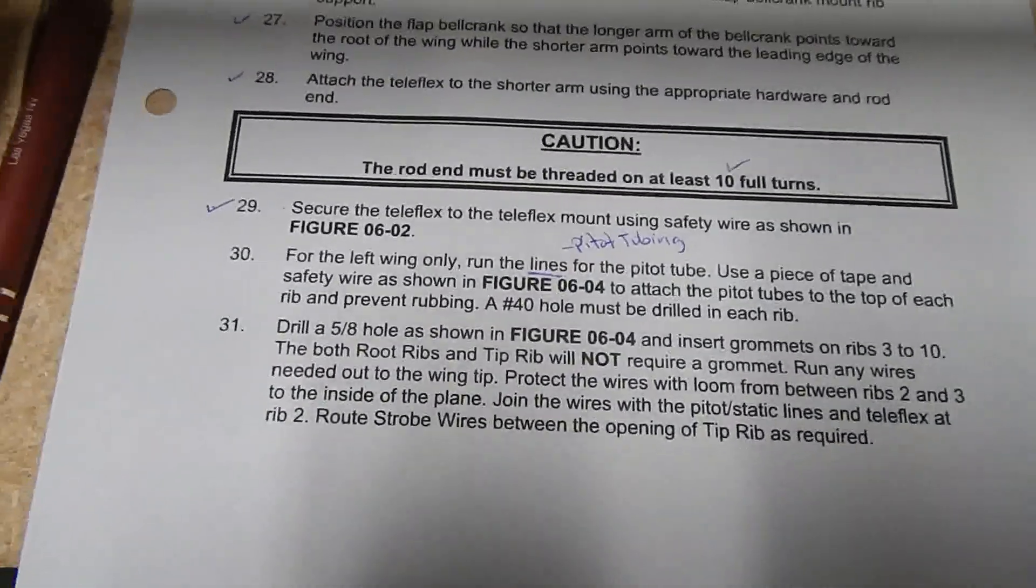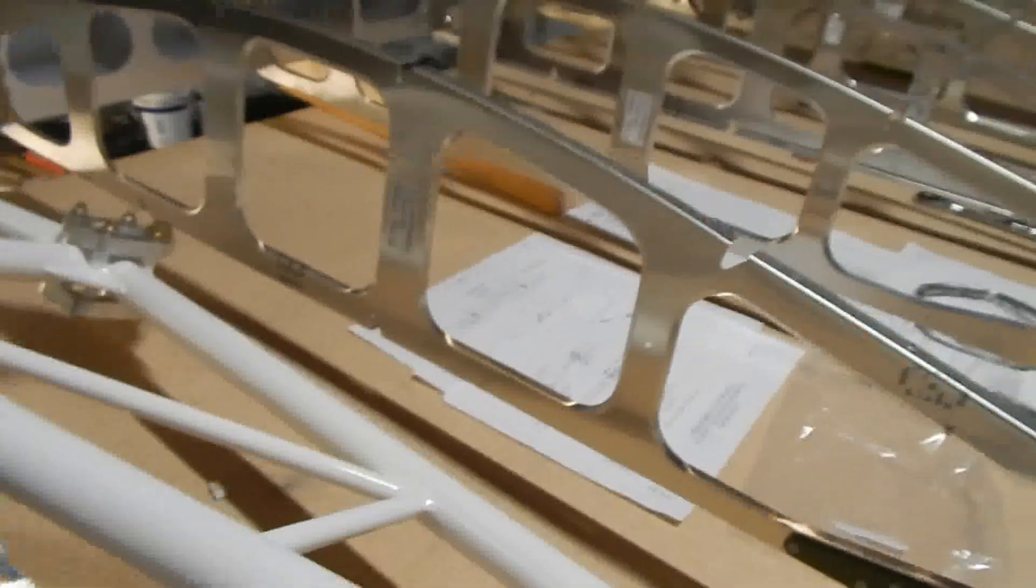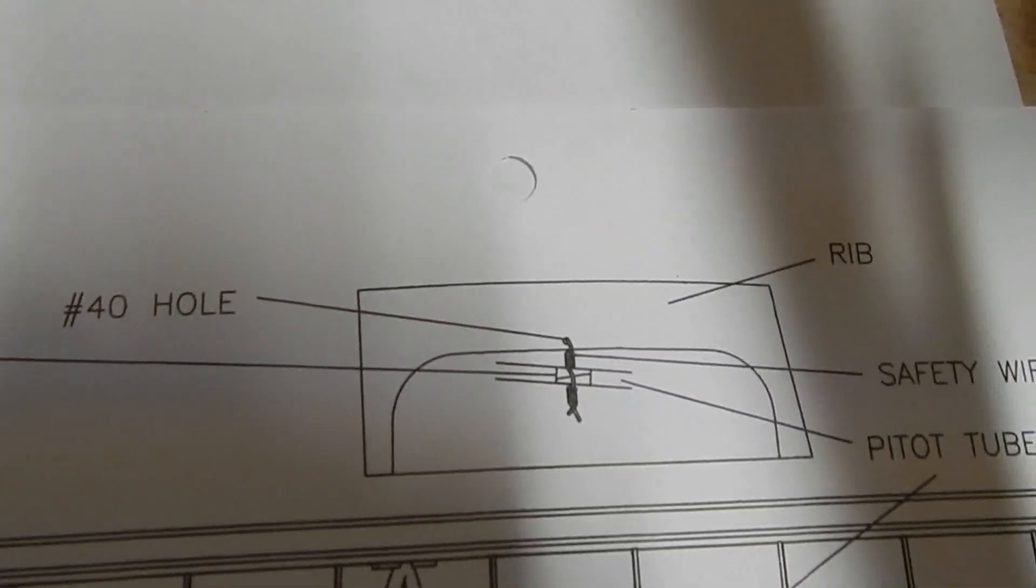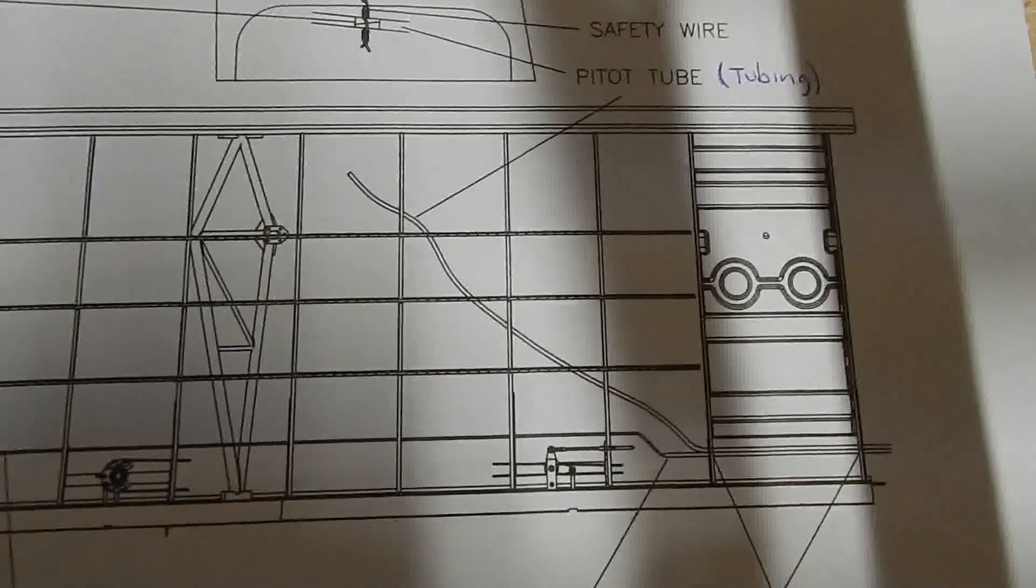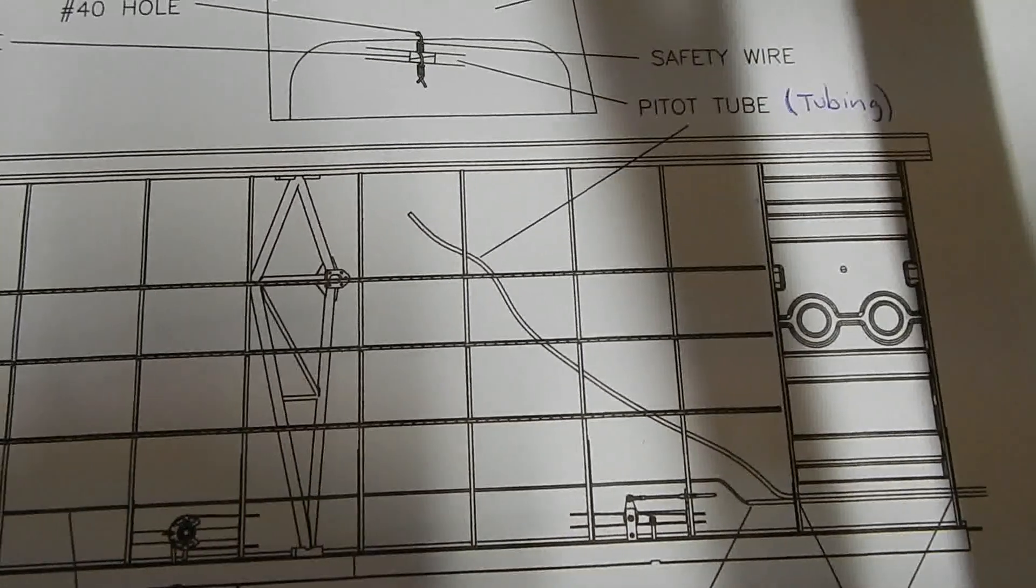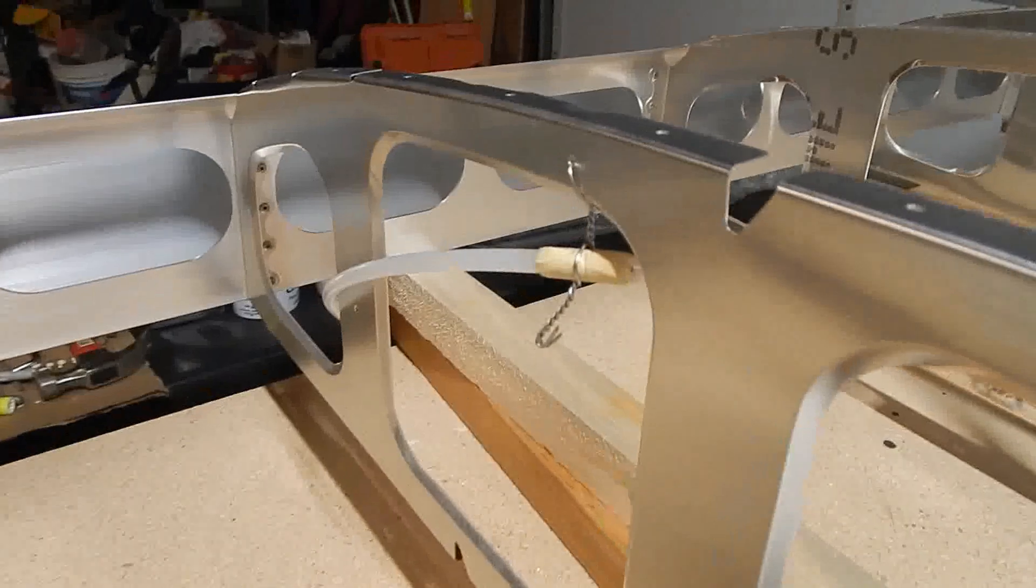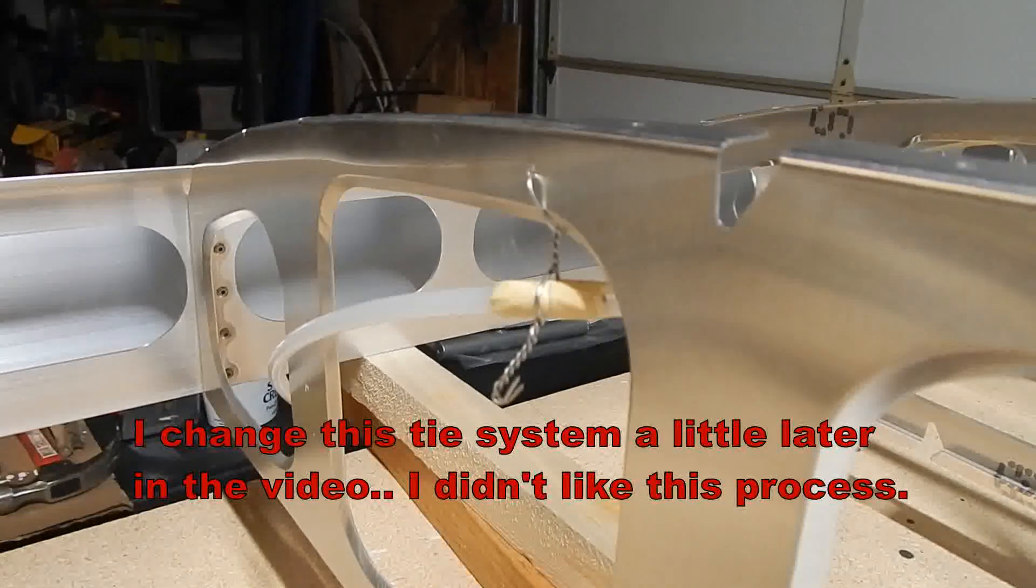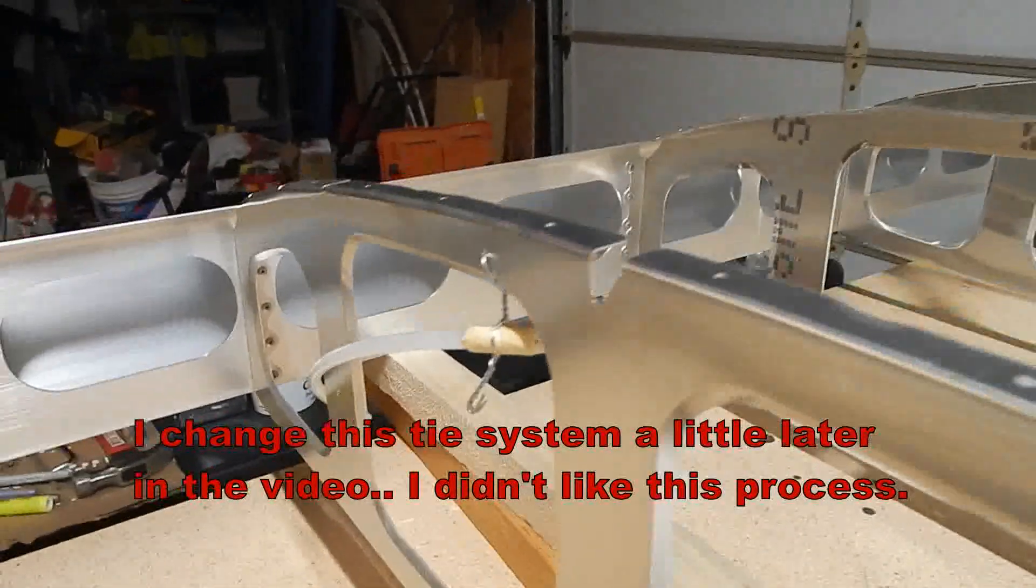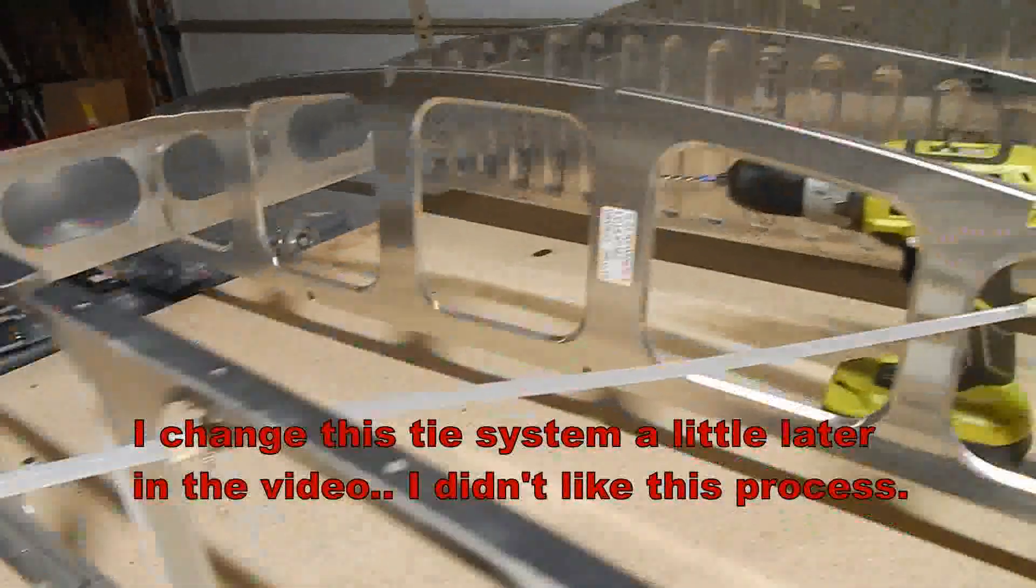First step on here is to run the tubing, item number 29. They recommend drilling a number 40 hole in the ribs, and then wire tie hanging the tube from the wire ties in the ribs, and that will run from the root all the way up just before the truss using a safety tire hanging system to hang the tube from the ribs.